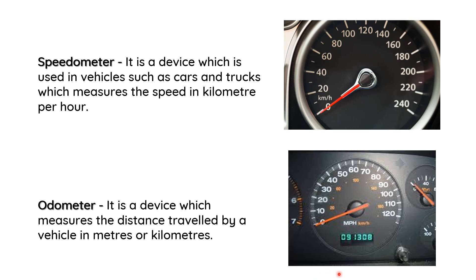There is also another meter that measures the distance moved by the vehicle. This device is called an odometer. It measures the distance traveled by a vehicle in meters or kilometers, depending on the vehicle. So to summarize: odometer measures distance, and speedometer measures speed.